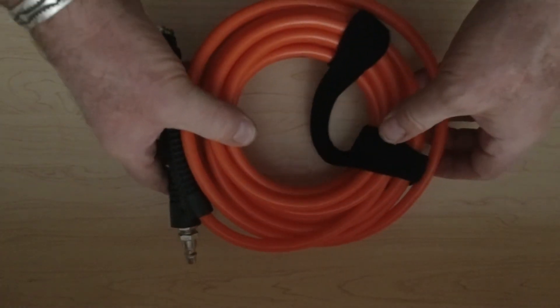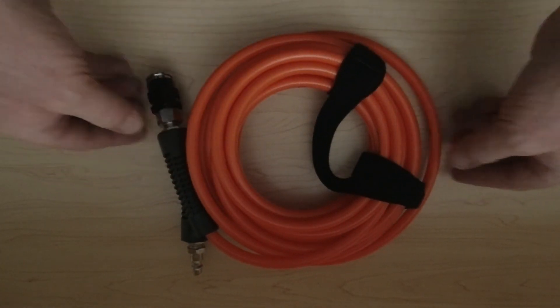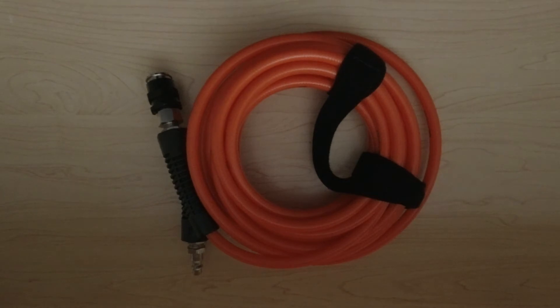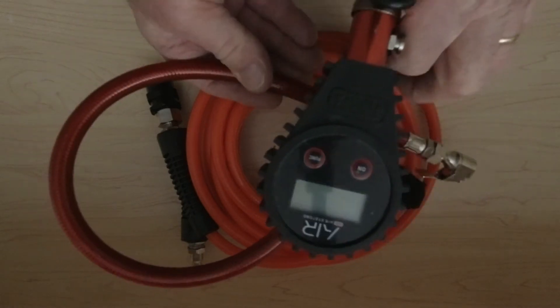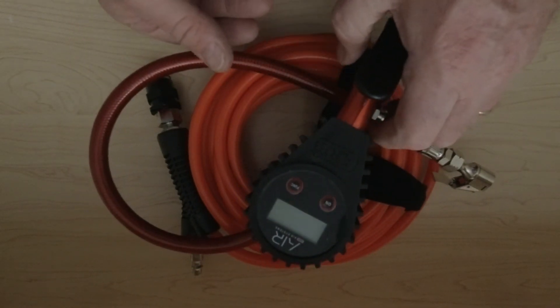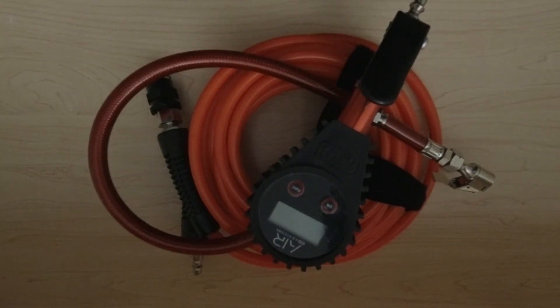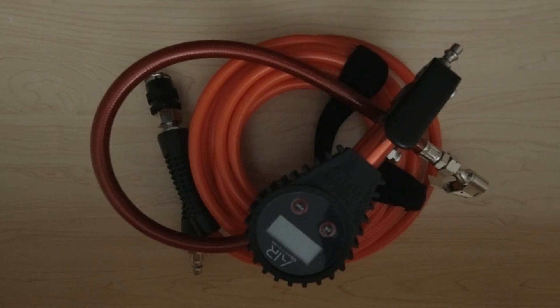We're also going to need an air hose. This is one I got from ARB however you can use any air hose just make sure that it's rated for 200 psi. Secondly we're going to need a tire inflator. Any inflator of your choice would work. I'm going to leave a link to all of these parts and items in the video description below.